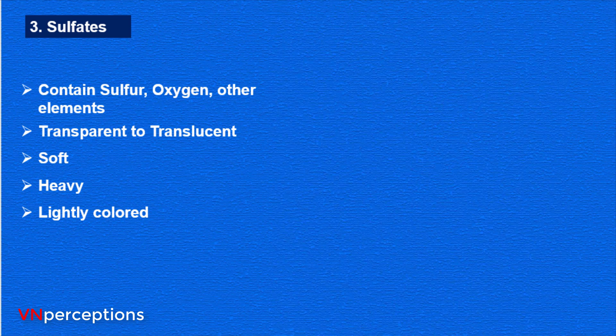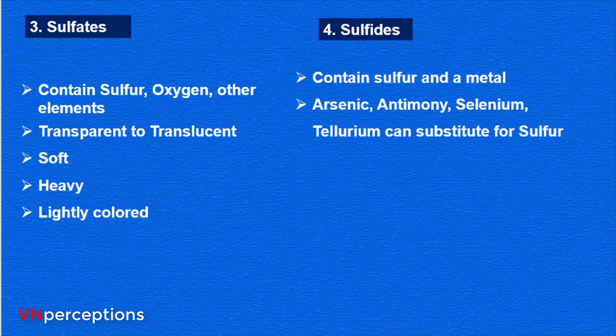Then come the sulphides. Sulphides also contain sulphur and a metal — such as arsenic, antimony, selenium, or tellurium — all of which can substitute for sulphur.